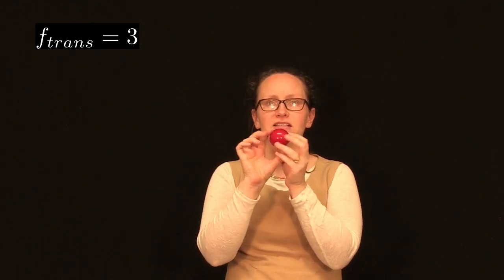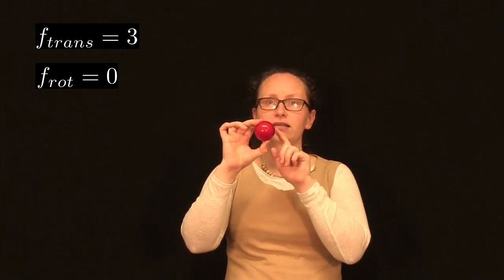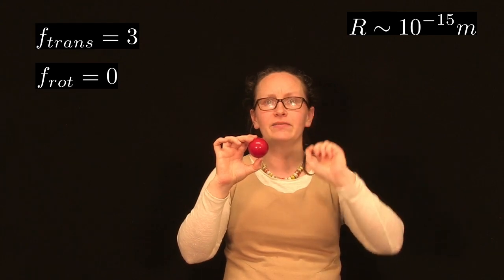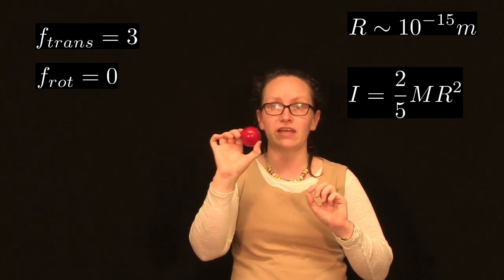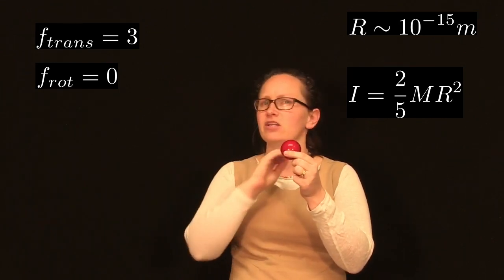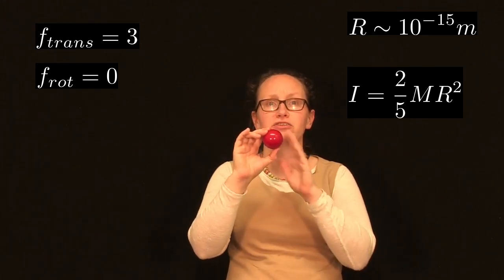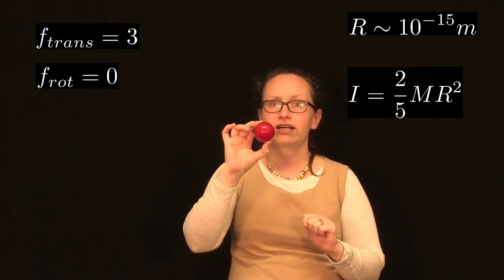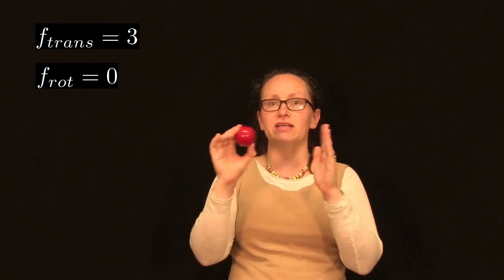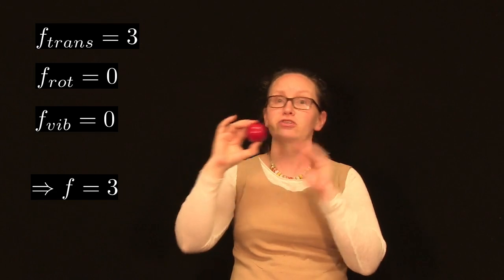This atom can also rotate, but there is a negligible amount of kinetic energy associated with that rotation. The reason is that atoms are very small and the mass is concentrated in the nucleus, which is about 10⁻¹⁵ meters in size. The moment of inertia for a sphere modelling our atom is given by 2/5 mr². So the rotational kinetic energy, ½Iω², is absolutely tiny due to the very small mass and very tiny radius. Any rotational kinetic energy is negligible, so there are no degrees of freedom associated with rotational kinetic energy for a monatomic particle. There are also no vibrations, since there are no bonds to vibrate about.